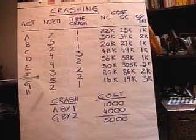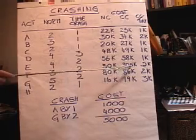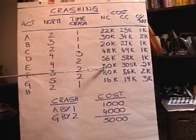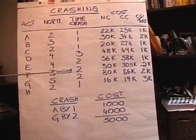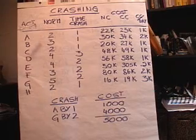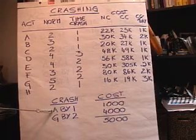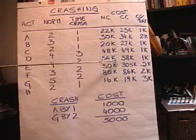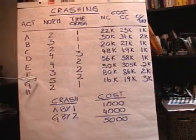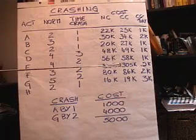Notice activity F: we can take it from three days down to two. The crash cost is $30,500 and the normal cost is $30,000, so that extra crash cost per day is only $500. Now we have to decide which activity to crash to get from 15 days down to 12. Even though F is cheaper, F is not on the critical path, so it doesn't help us to crash that. We want to look at A, C, E, G, or H and decide which ones are cheapest.